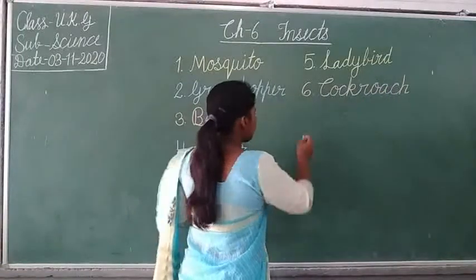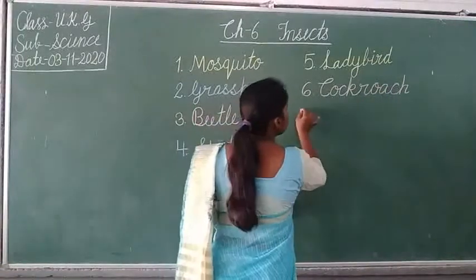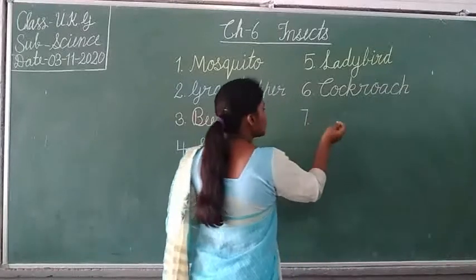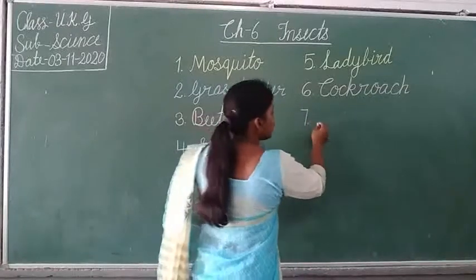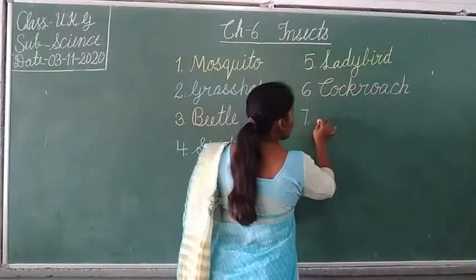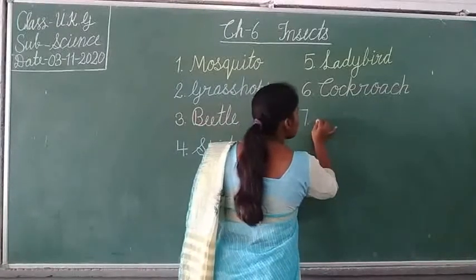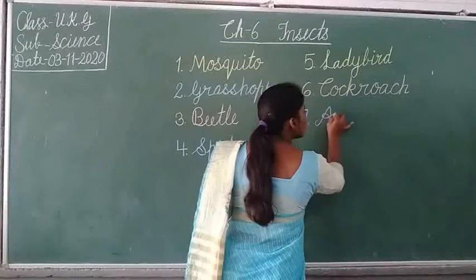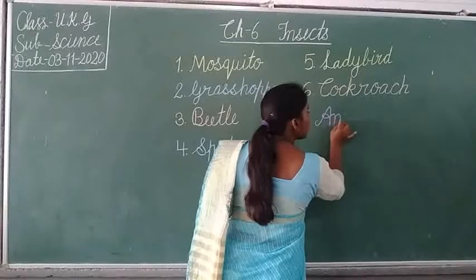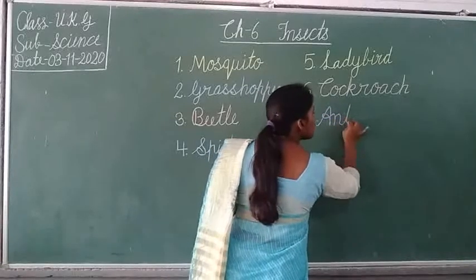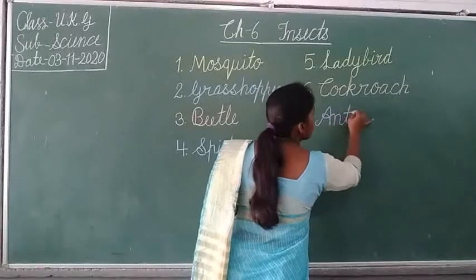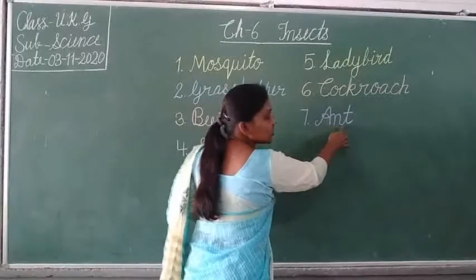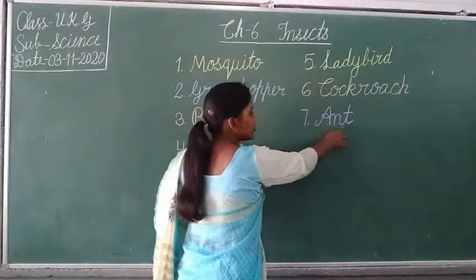Number seven: ant. What is the spelling of ant? A-N-T. Ant.